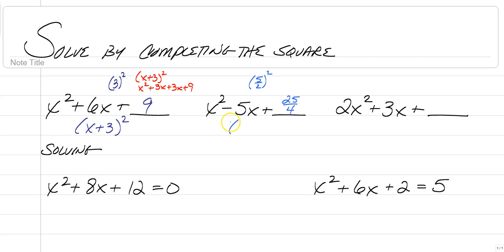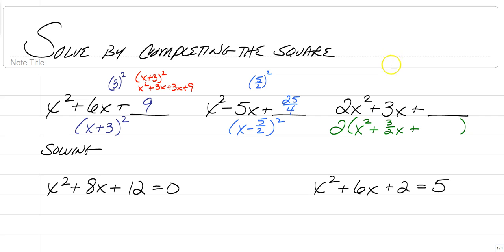To write it as a square, we would have x minus 5 halves squared. The last one is even more complicated, because before you can complete the square, you need to get rid of the leading coefficient. So the first thing you're going to do is divide that out, giving you 2 times x squared plus 3 halves x plus whatever goes on the line. We still have to take half of that, so half of 3 halves is 3 fourths, squared. We fill this with 9 sixteenths, and then we would have this written as 2 times x plus 3 fourths squared.